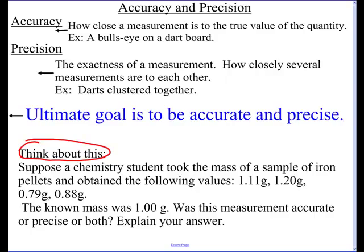So we look at those values, and we've got 1.11, 1.20, 0.79, 0.88, and we go, wow, that's a big variety. So hopefully you would say that this is not precise. Notice that the values are not close to each other. Those values are quite a bit different. So these values are not precise.